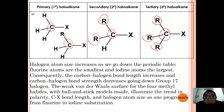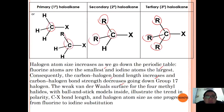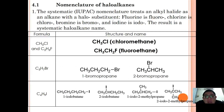Halogen atomic size increases going down the periodic table, so fluorine has the smallest atom while iodine has the largest. Consequently, the carbon–halogen bond length increases and bond strength decreases going down Group 17. The ball-and-stick model for methyl halides illustrates how C–X bond length and halogen atom size increase as you progress from fluorine to iodine substitution.